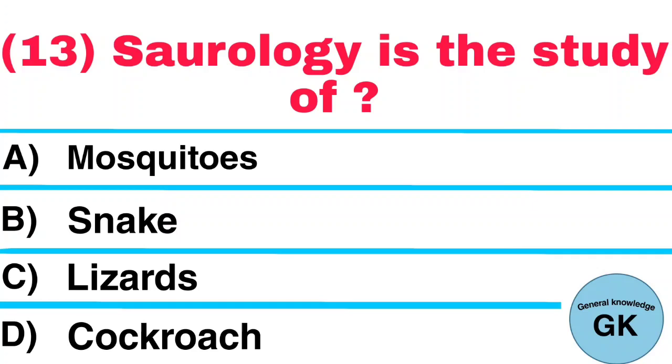Question number 13. Sorology is the study of A. Mosquitoes. B. Snake. C. Lizards. D. Cockroach. Answer: Lizards.